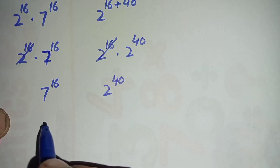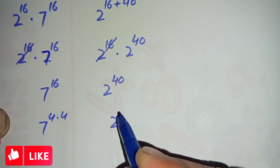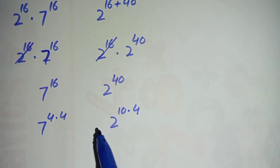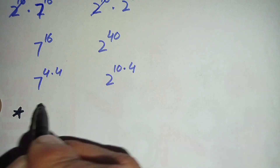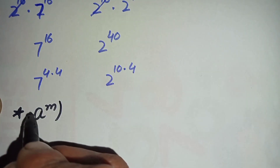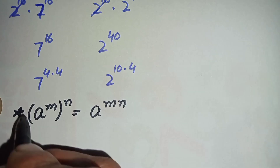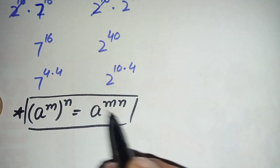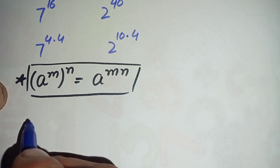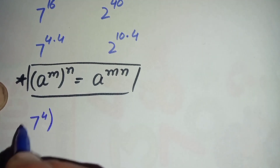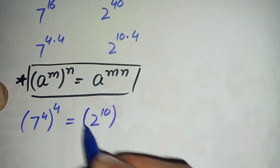In the next step, we rewrite the powers: 16 can be written as 4 times 4, and 40 can be written as 10 times 4. Using the exponential property that a^(m×n) = (a^m)^n, we transform these numbers. The equation becomes 7 raised to power 4, whole raised to power 4, compared to 2 raised to power 10, whole raised to power 4.